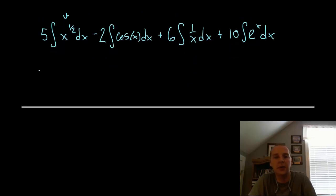Plus 10 times the integral of e to the x dx. We'll integrate each of these respectively. This integral, you'd have 5, the tag along constant. You increase x to the 1 half's exponent by 1, you get x to the 3 halves divided by 3 halves. You remember the power rule, x to the n plus 1 over n plus 1.